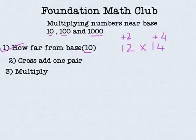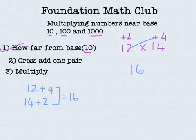The second step says cross add one pair. So we have to cross and add a pair. Now we could add any pair. We could either add 12 plus 4 or 14 plus 2. In either case the answer will be equal to 16. So let's just write it over here.